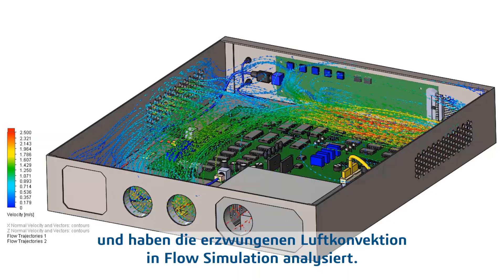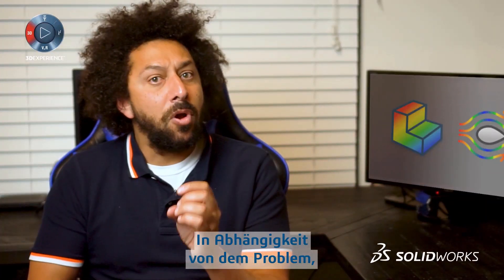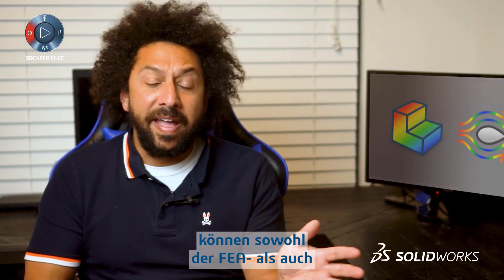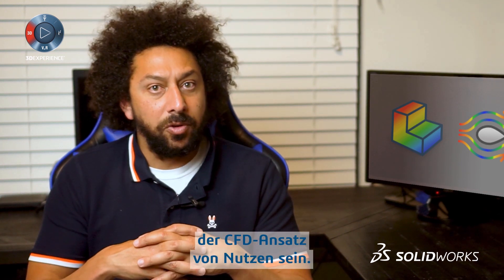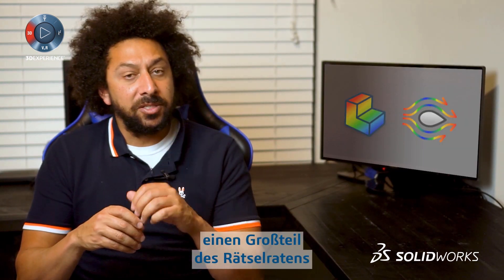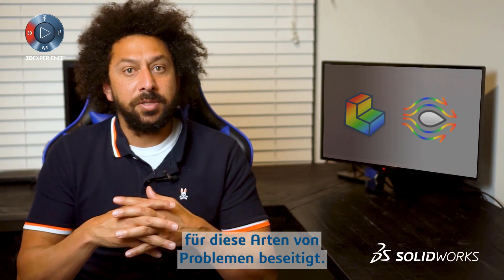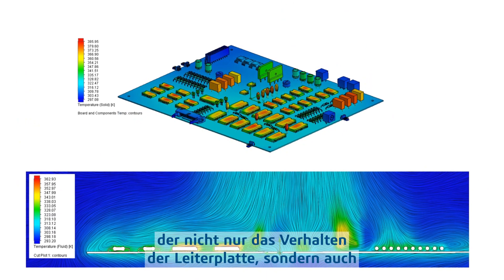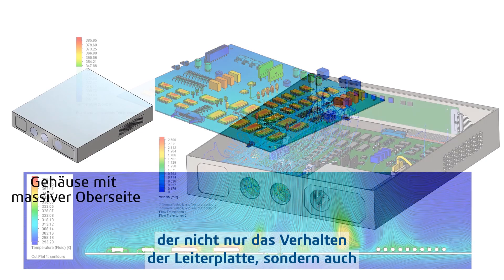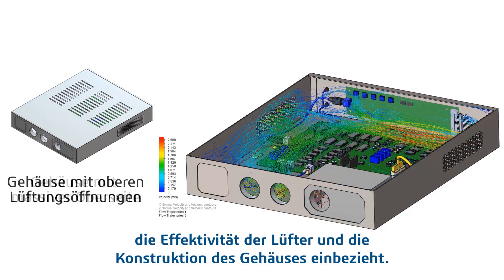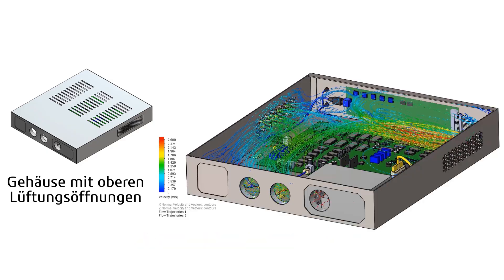We made the conclusion that we would need to add fans for proper cooling and ran the forced air convection analysis in flow simulation. Depending on the problem you're trying to solve, both the FEA and CFD approaches could have value, but flow simulation removes most of the guesswork for these types of problems. We can get a more granular set of results that incorporates not only the behavior of the PCB, but also the effectiveness of the fans and the design of the enclosure.